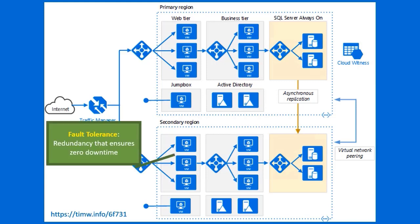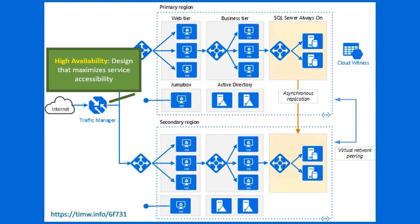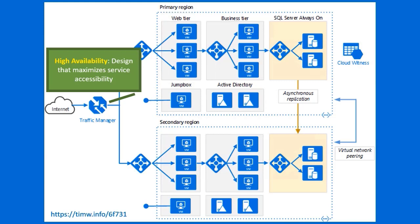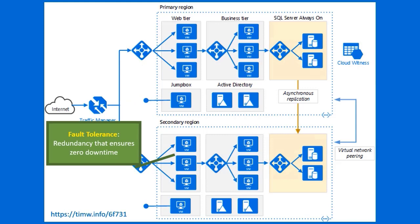High availability functions closely with fault tolerance, where you include redundancy, repetition, or cloning in your environment to ensure zero downtime. Because your service is highly available doesn't mean it might not completely go down. Looking at the top part of this diagram, we have a three-tier web application deployed in Azure virtual machines in a primary Azure region. We've got three identically configured VMs — if one or two go offline the web tier is still available, but all three or the load balancer could go down and bring down the entire service. We can minimize that possibility by ensuring fault tolerance.